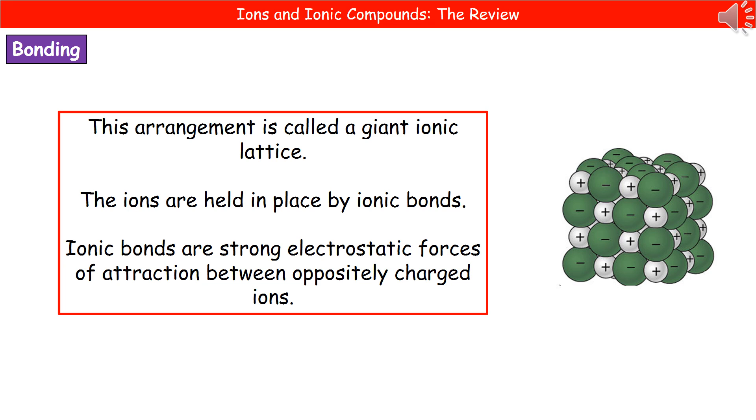So this is an arrangement called a giant ionic lattice. So all of those positive and negative ions are being held in that very clear fixed positioning, where they've got that regular repeating pattern of positive, negative, positive, negative. Those are being held in place by ionic bonds. So remember, the ionic bonds form between the positive and the negative ions. Now, if we think about what ionic bonds are, they're very strong electrostatic forces of attraction, and they will only occur between oppositely charged ions.